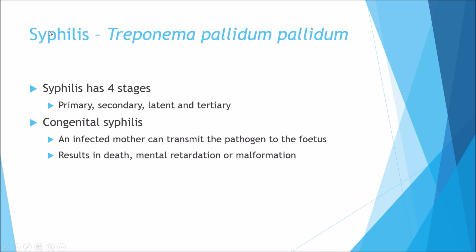The disease caused is syphilis, which has four stages: primary, secondary, latent, and tertiary. Apart from sexually transmitted syphilis, we can also get congenital syphilis, where an infected mother transmits it to the fetus via the umbilical cord. As a result, the fetus can die — causing a miscarriage — or if successfully born, it will have mental retardation and/or malformation, resulting in crippling disabilities.